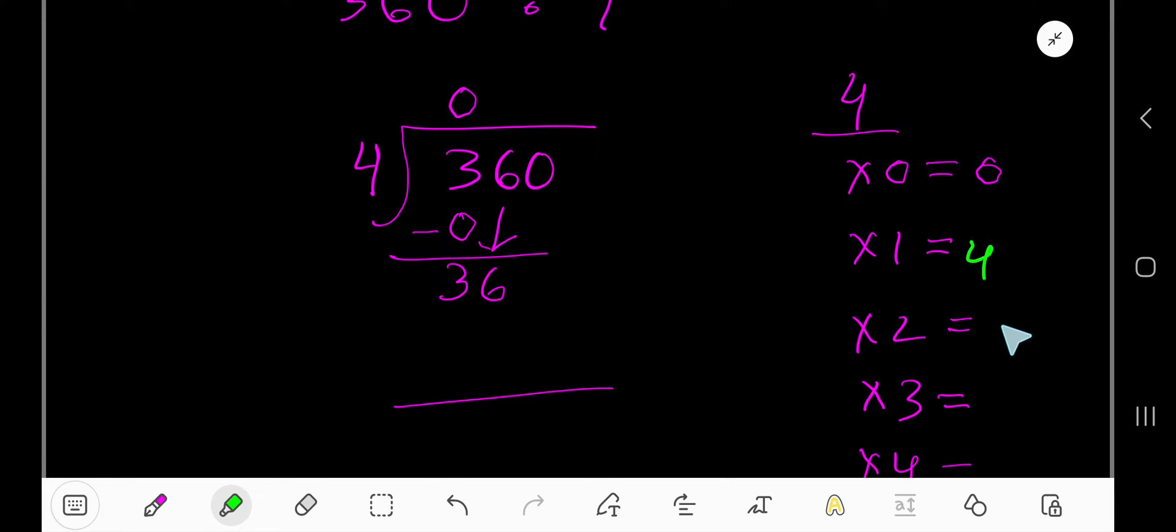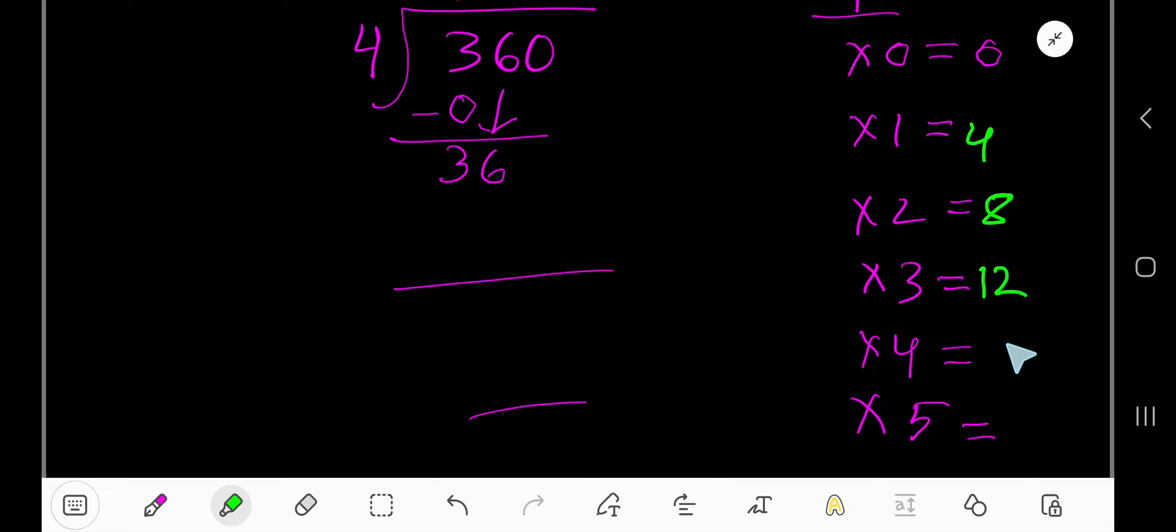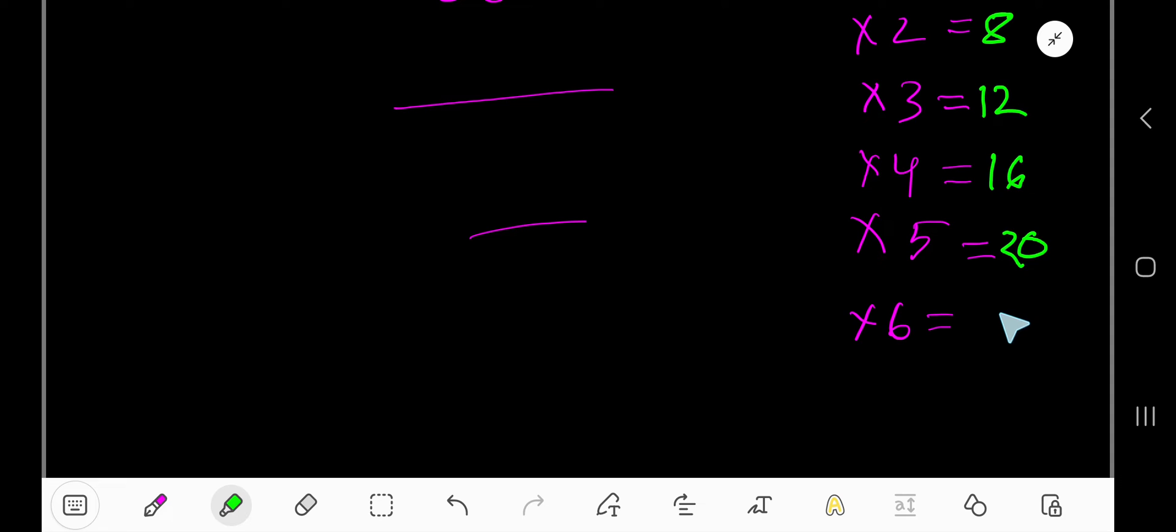Then 4 times 2 is 8. Just add 4 with this, 4 times 3 is 12. Then 12 plus 4 is 16, then 16 plus 4 is 20, then add 4 to get 24, then 7...